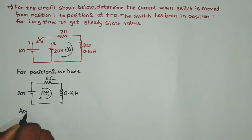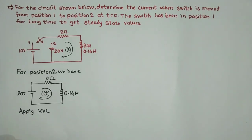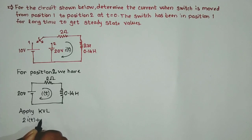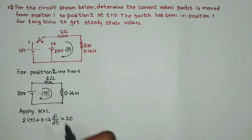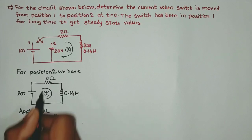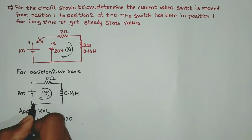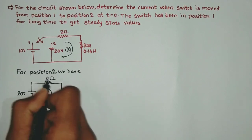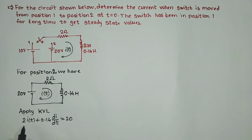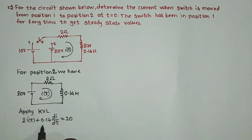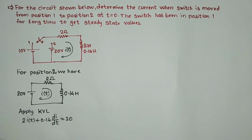Now let us apply KVL. If we apply KVL here we will get: 2·i(t) plus 0.14·di/dt equals 20. The current flowing through the inductor is given by L·di/dt, so it is 0.14·di/dt. The current flowing through the 2-ohm resistor is i(t), so the voltage drop is 2·i(t) plus 0.14·di/dt, and the supply voltage is 20.